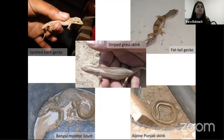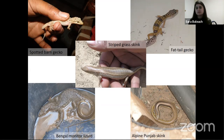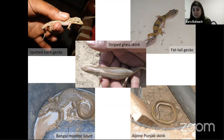We got some really cool species. The spotted barn gecko was the one I was always scared of as a kid — and look, I'm holding it, which was such a great achievement for me. Then we had a baby Bengal monitor lizard — the bigger ones just jump out. We also got strip grass skink and a fat-tail gecko. You can see the blocks in my traps — those are shelters because it gets really warm inside and without them the reptiles would just die of heat.